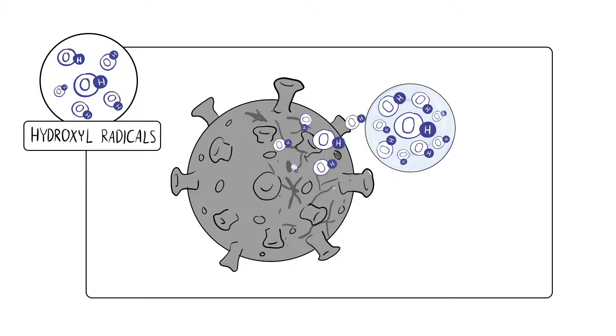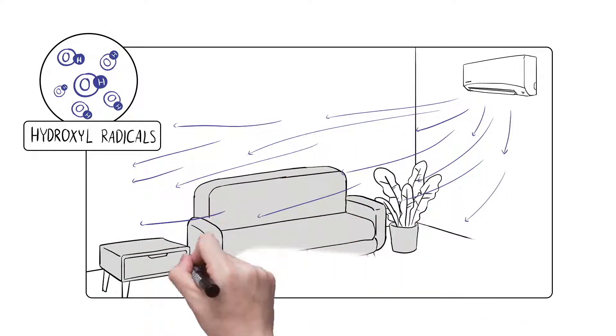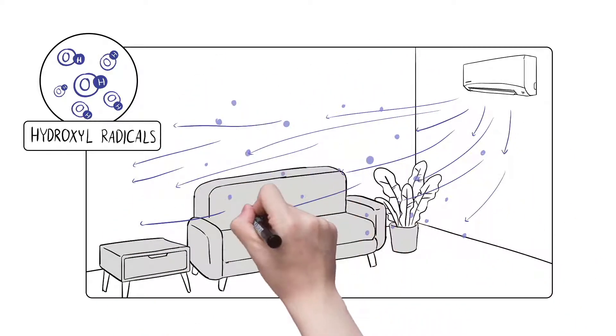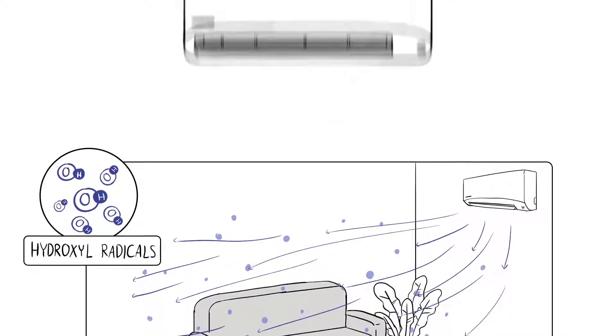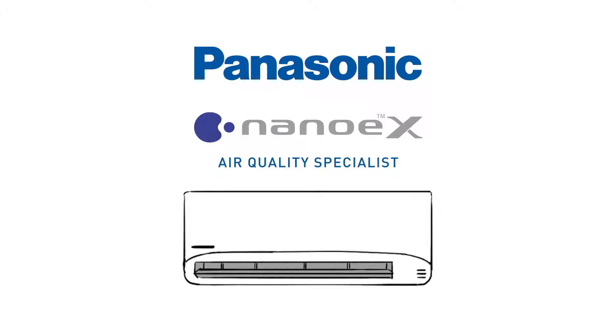which actively inhibits bacteria and viruses in the air and on surfaces. Unlike other technologies, Panasonic Nano-EX actively spreads ions through the air and onto surfaces. Let us demonstrate how Nano-EX improves the air quality in your room.